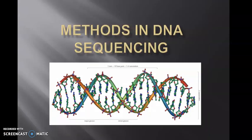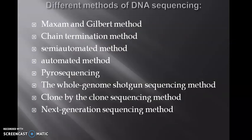So now we will look into the methods in DNA sequencing. There are different methods of DNA sequencing: Maxam and Gilbert method, chain termination method by Sanger, semi-automated method, automated method, pyrosequencing, the whole genome shotgun sequencing method, clone by clone sequencing method, and next generation sequencing or NGS method. So we will check into them one by one.